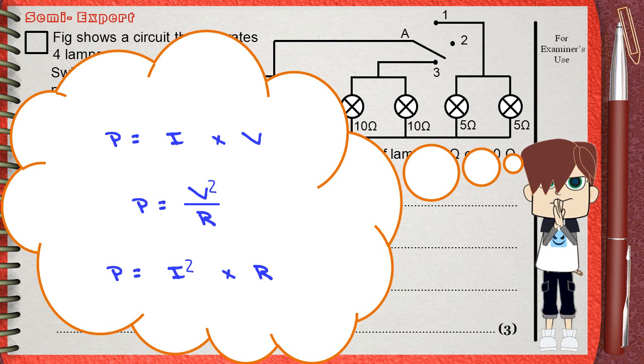Which equation will we use to compare between the lamps? I suggest that P equals V square over R will be the most suitable one. Why? Because we have the V of each lamp, the voltage, and we also have the resistance of each lamp. We can use other equations, but this will need further calculations to calculate the current intensity I, which is not mentioned in the question.